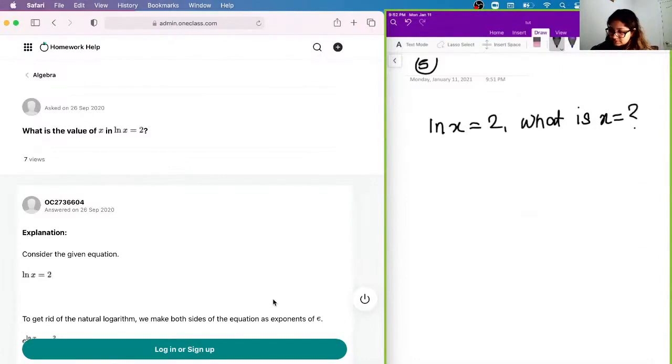If you guys recall the property, we have e to the power of ln of x, which is equal to x.